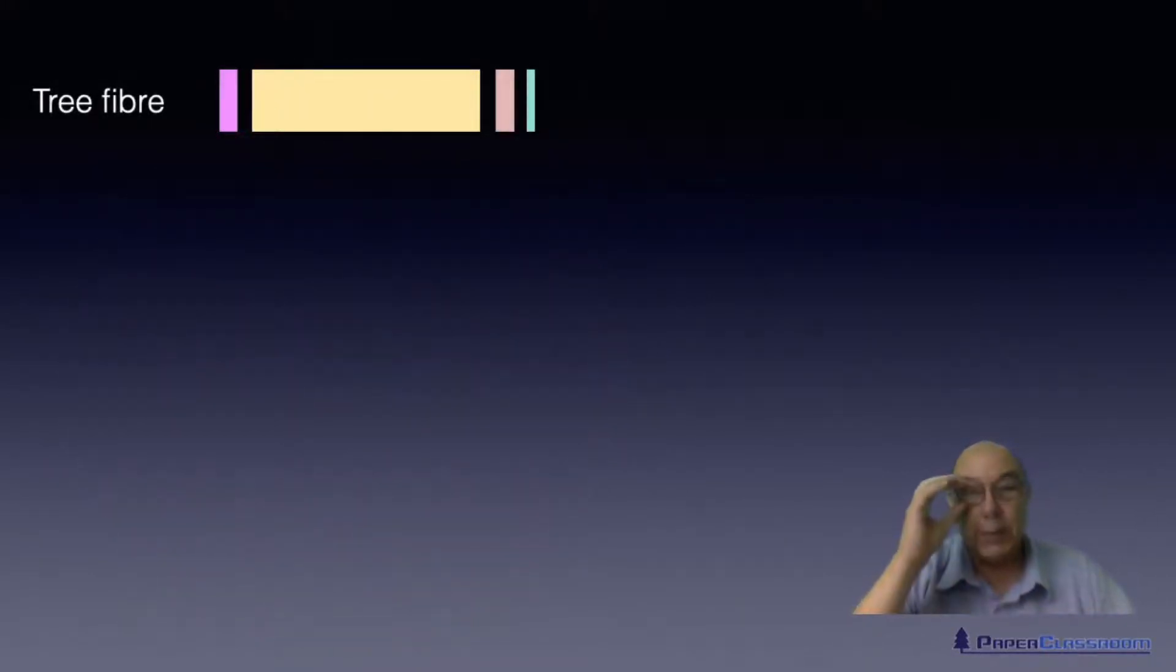So there's our slice. Here is our primary wall, then a bit of a gap, the S1 and a bit of a gap, the S2, a bit of a gap, and the S3. So let's go through the whole process.